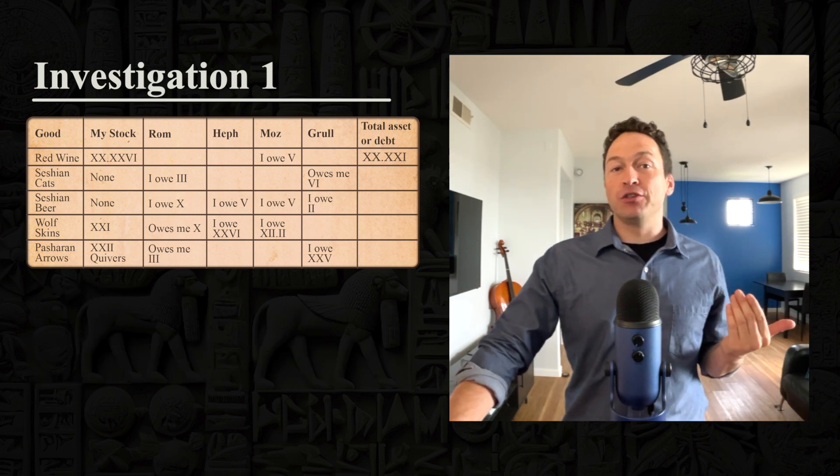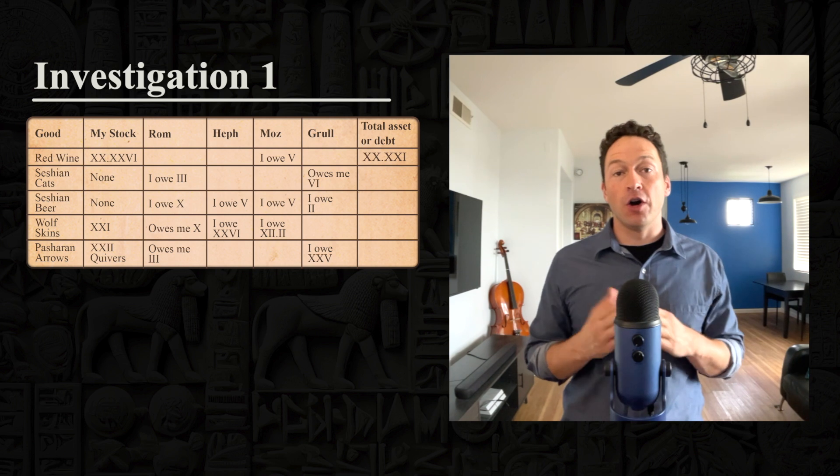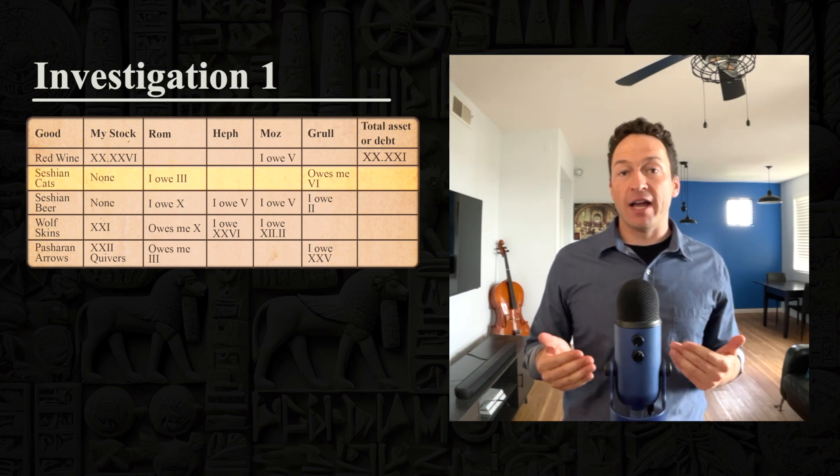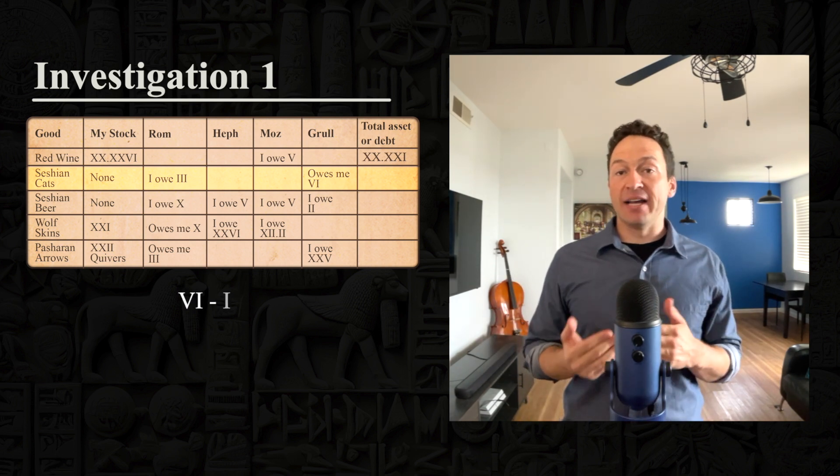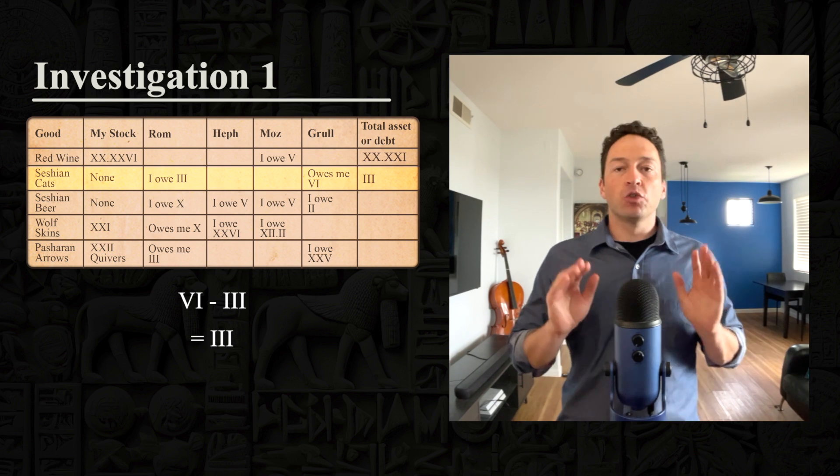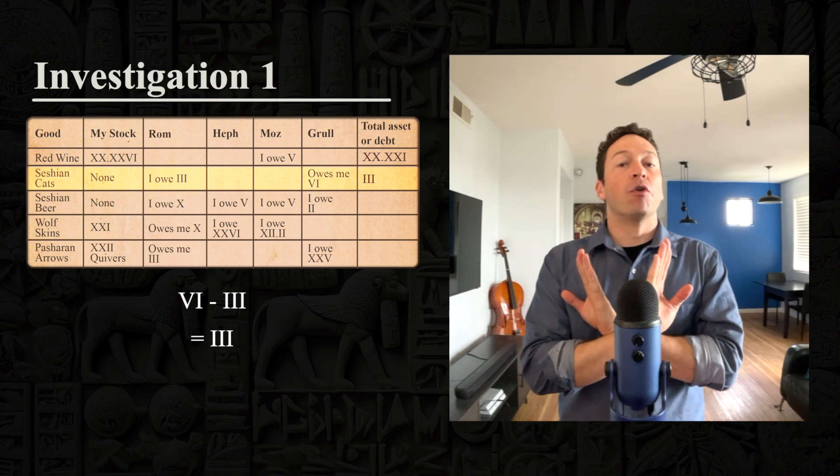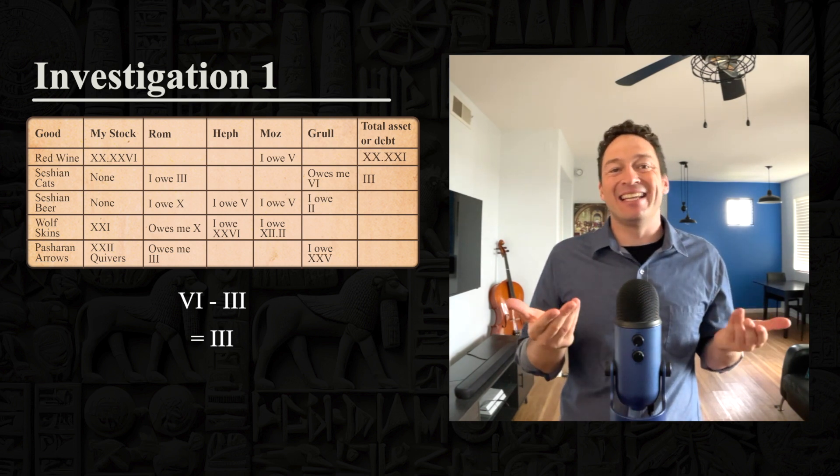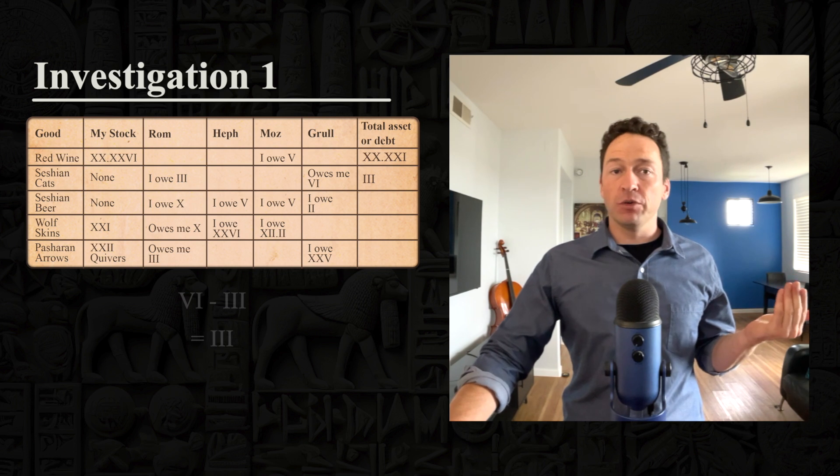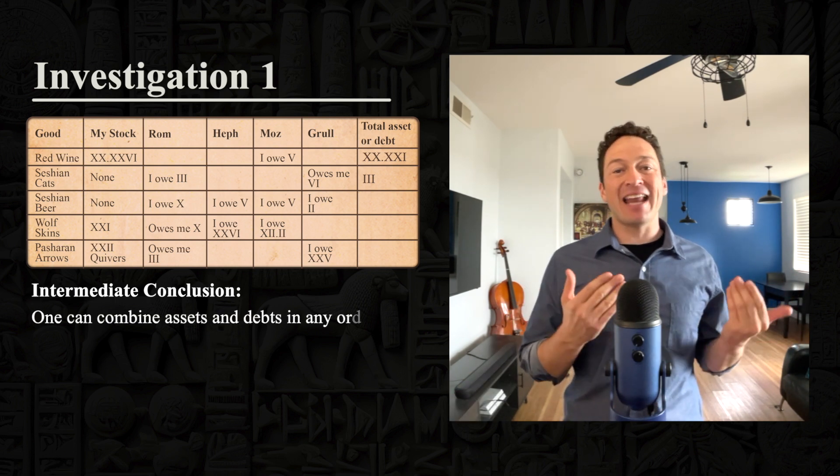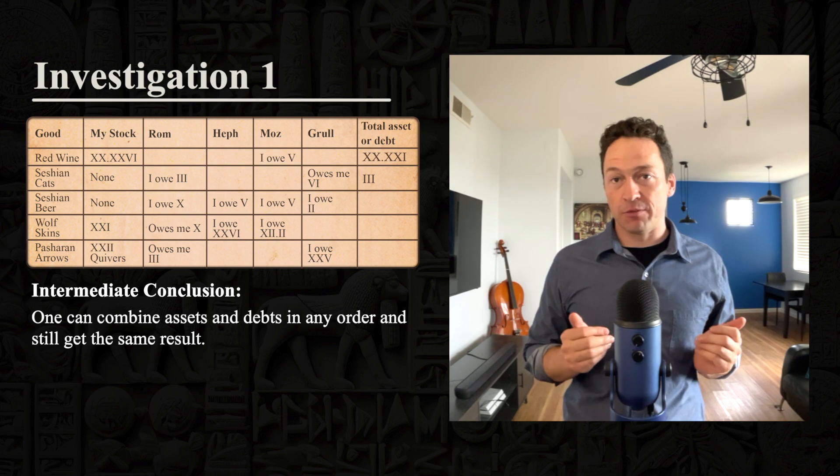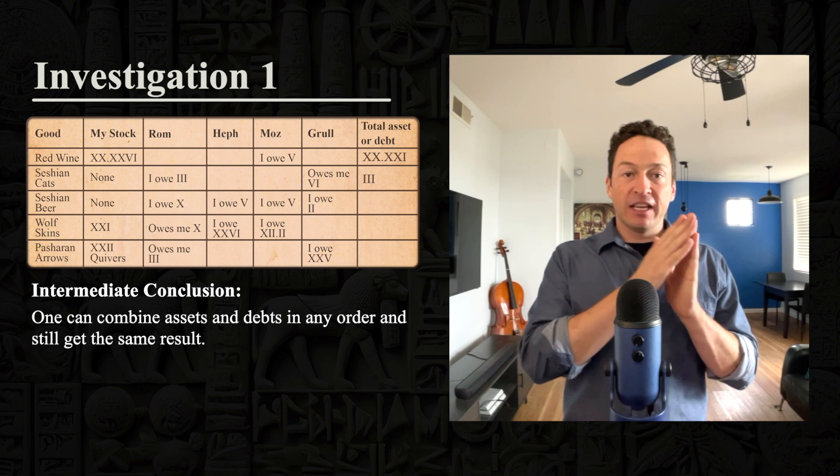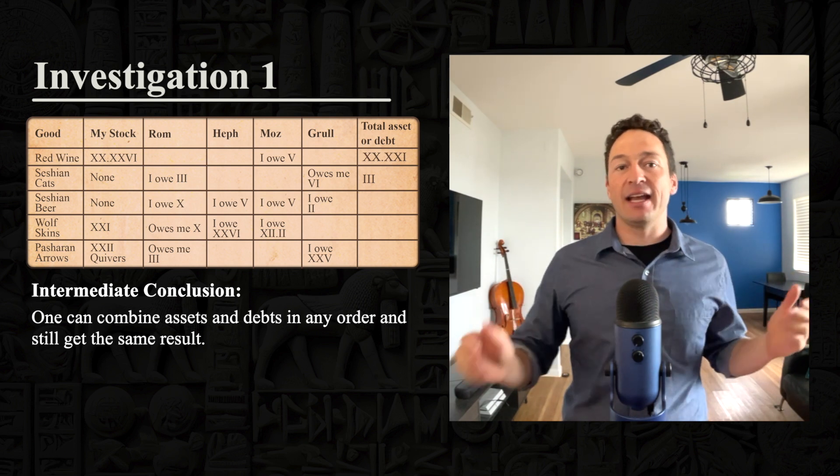This allows Ark to come to an intermediate conclusion. When combining a larger asset and a smaller debt, one simply subtracts the debt from the asset, since the way debt cancels an asset is the same as subtraction, so long as the asset is of greater quantity. Next, Ark has to figure out his total stock of cats. So he owes Rom three, but Grohl owes him five and one. So he can write five and one minus three. What Ark has done here is he's changed the order of combining the assets and the debt. When we combine assets and debts, order doesn't matter.